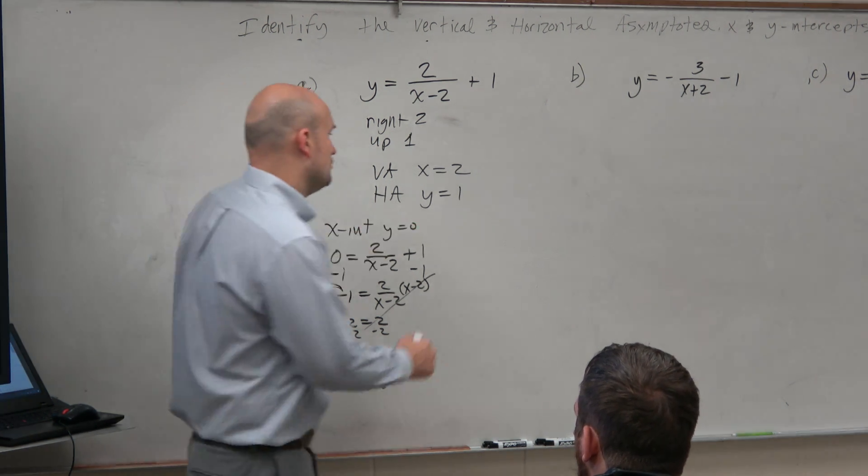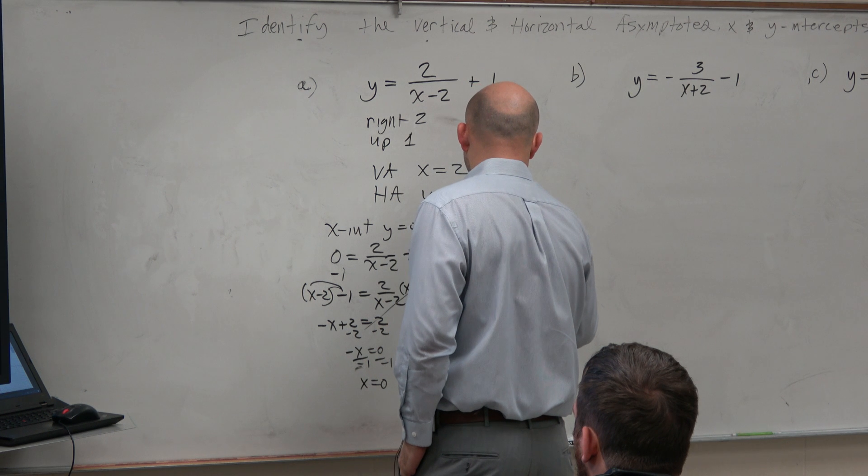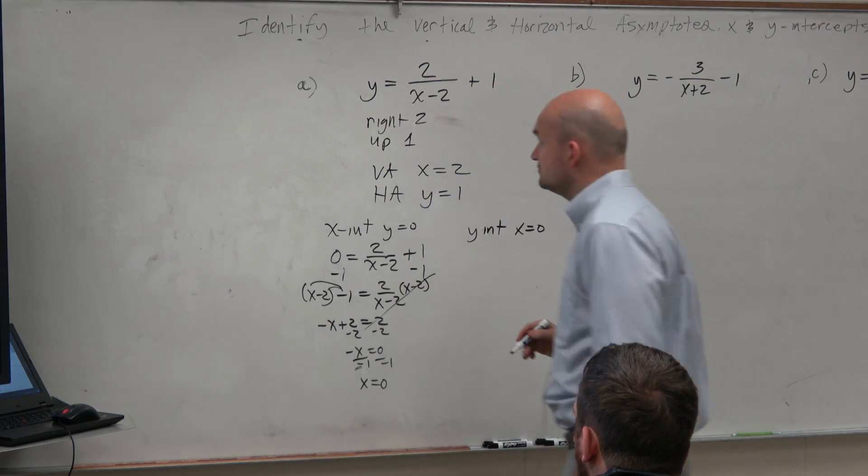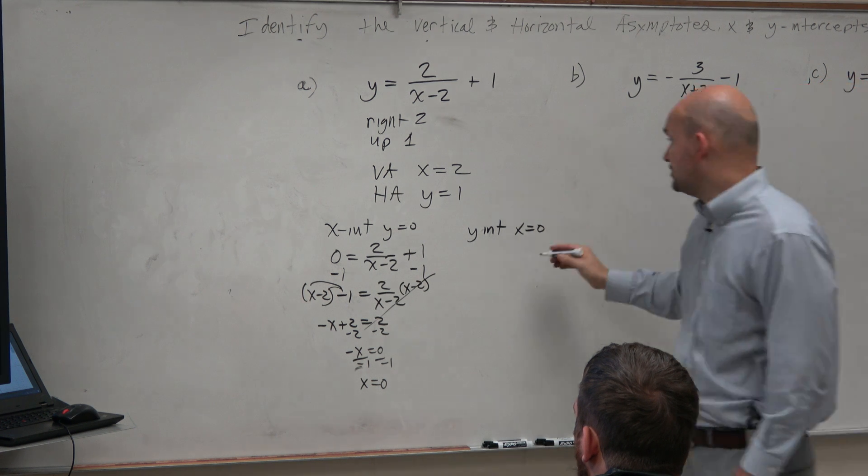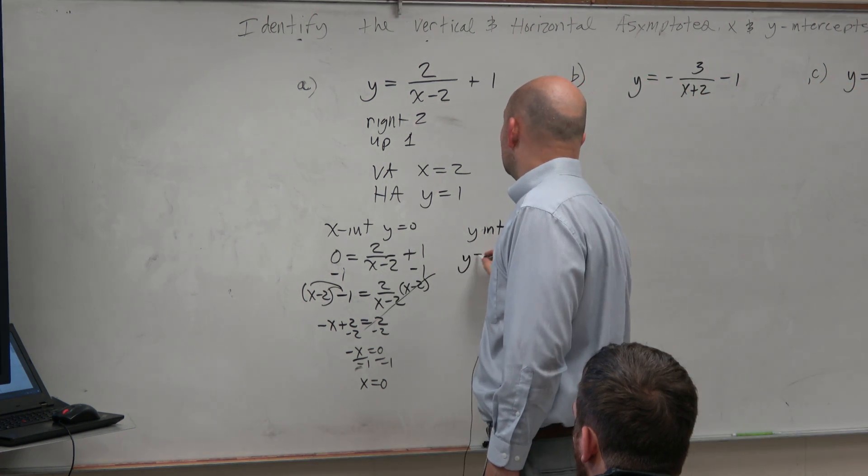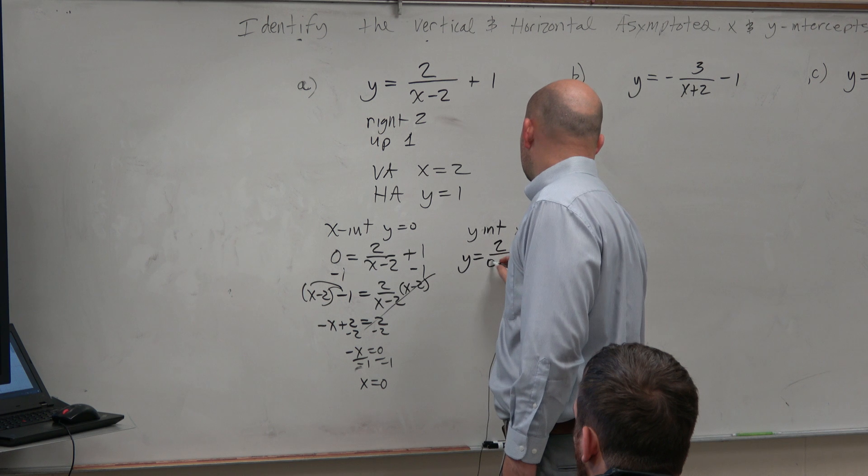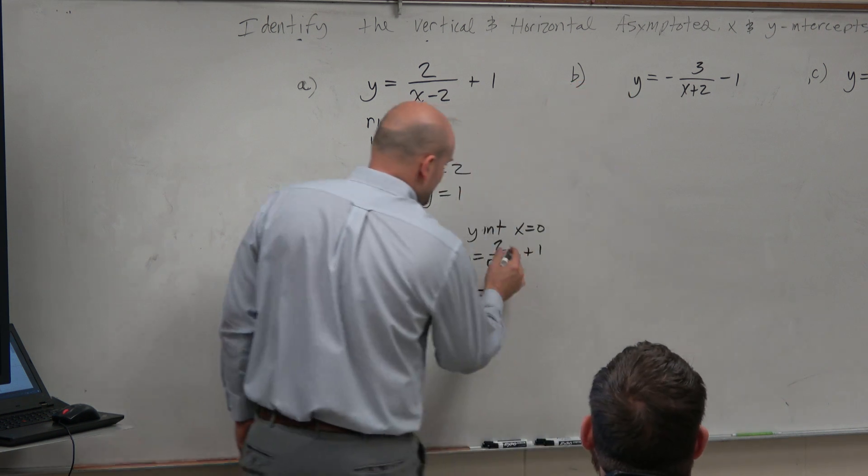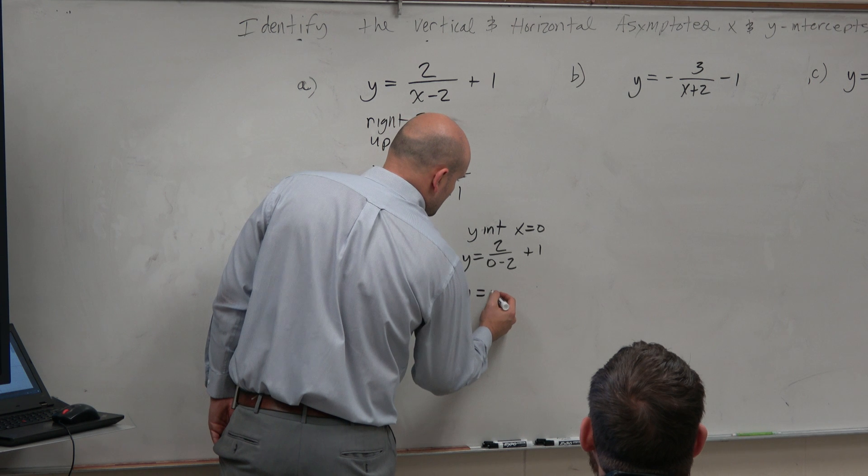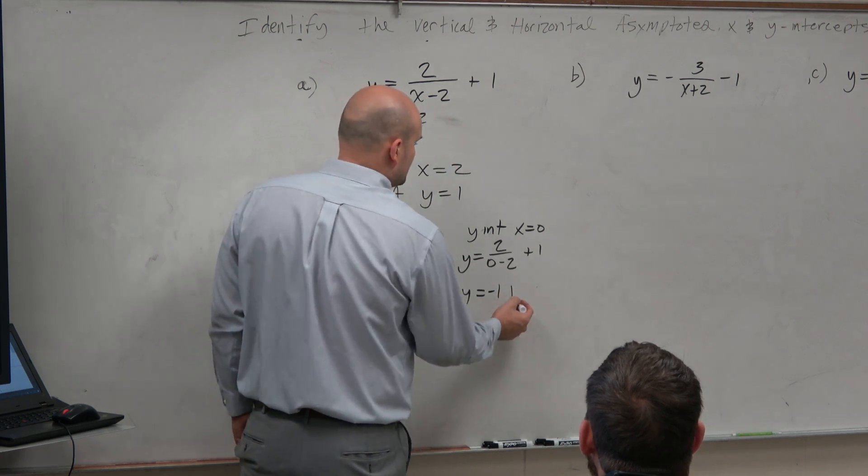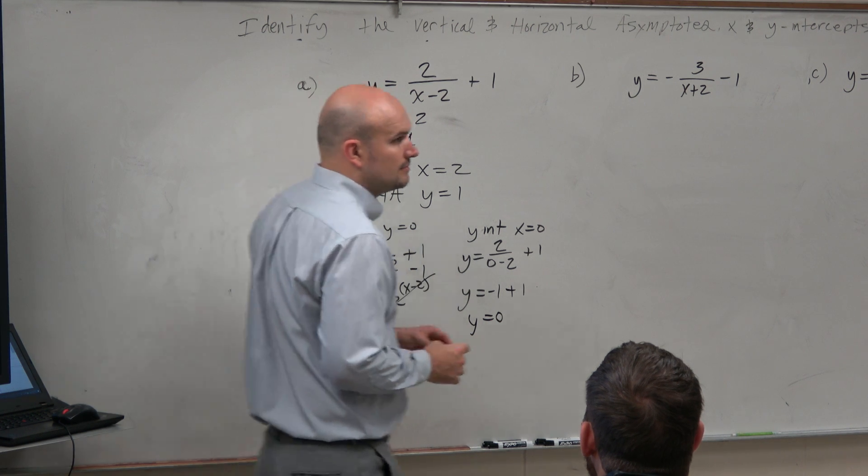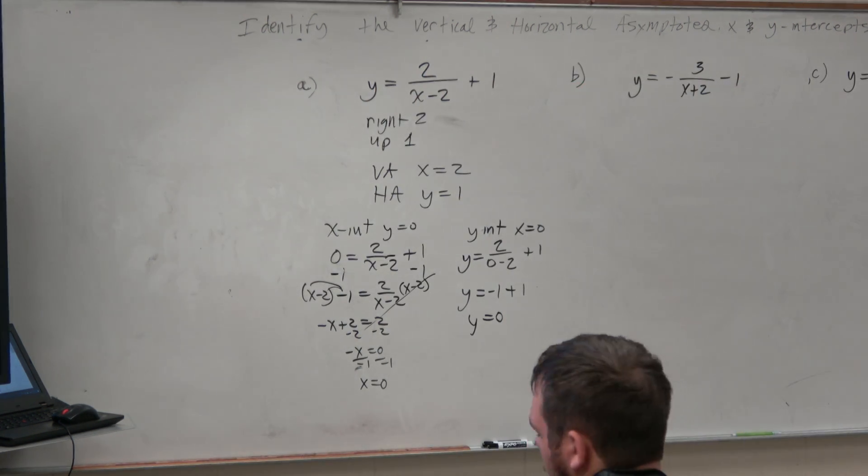OK? For the y-intercept, x is equal to 0. So now I just take the exact same equation and plug 0 in for x. 2 divided by negative 2 is negative 1 plus 1, y is equal to 0. And you say, OK. Cool.